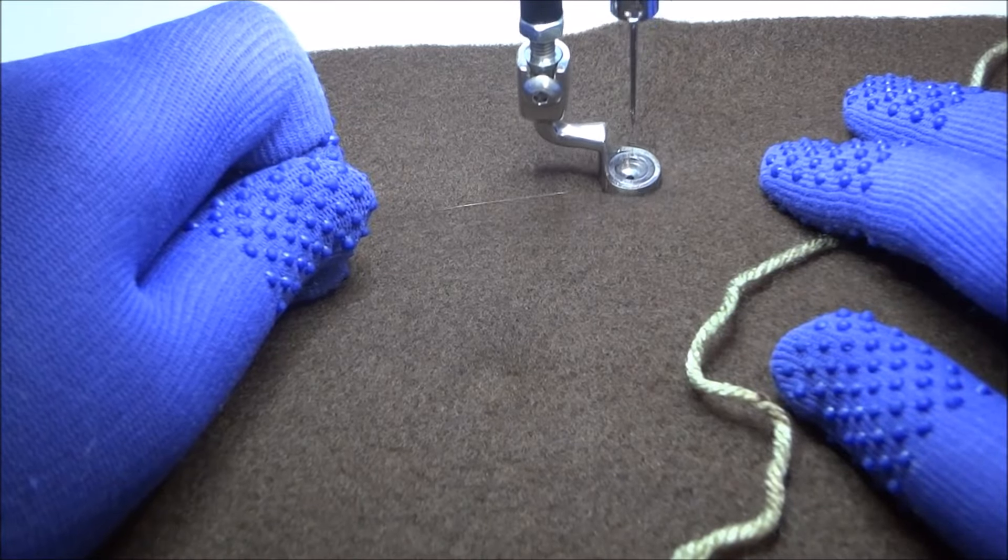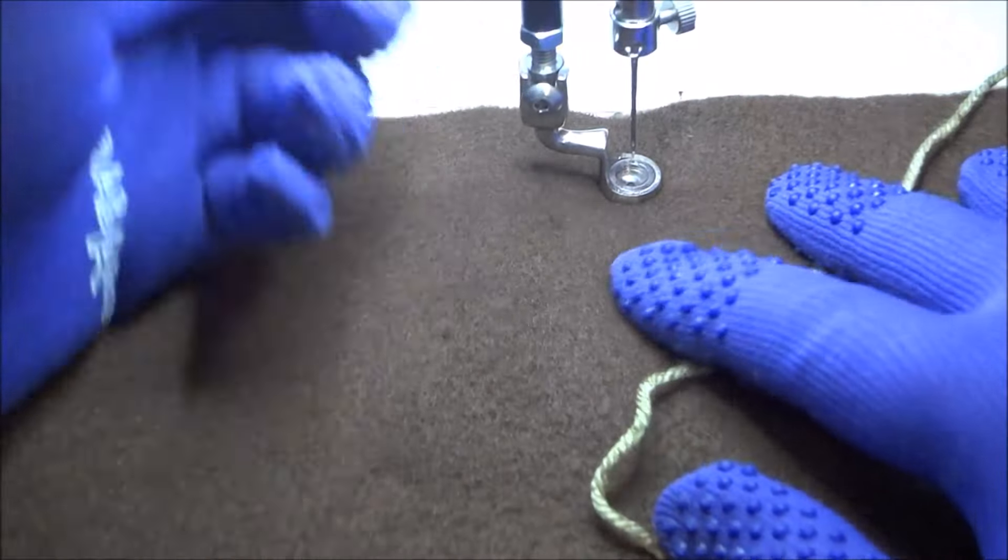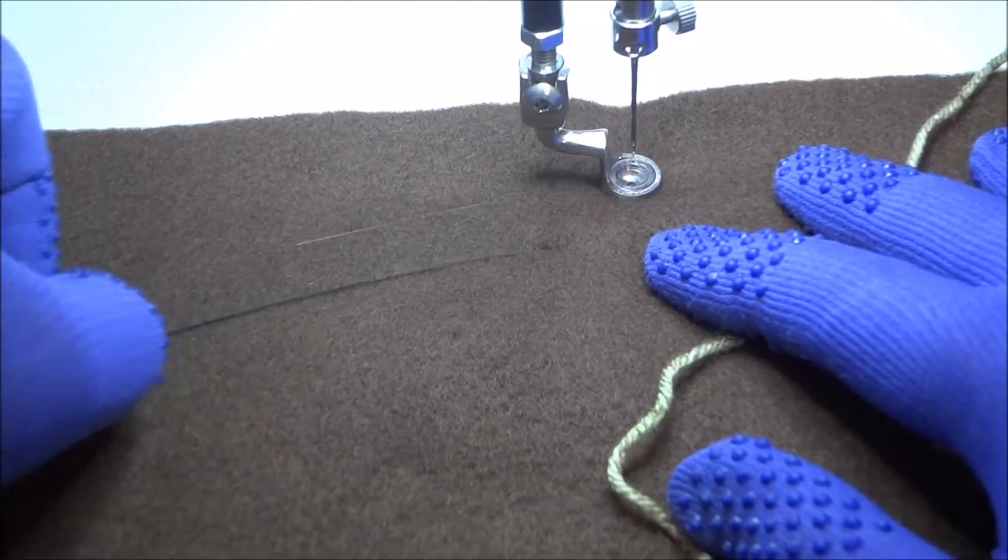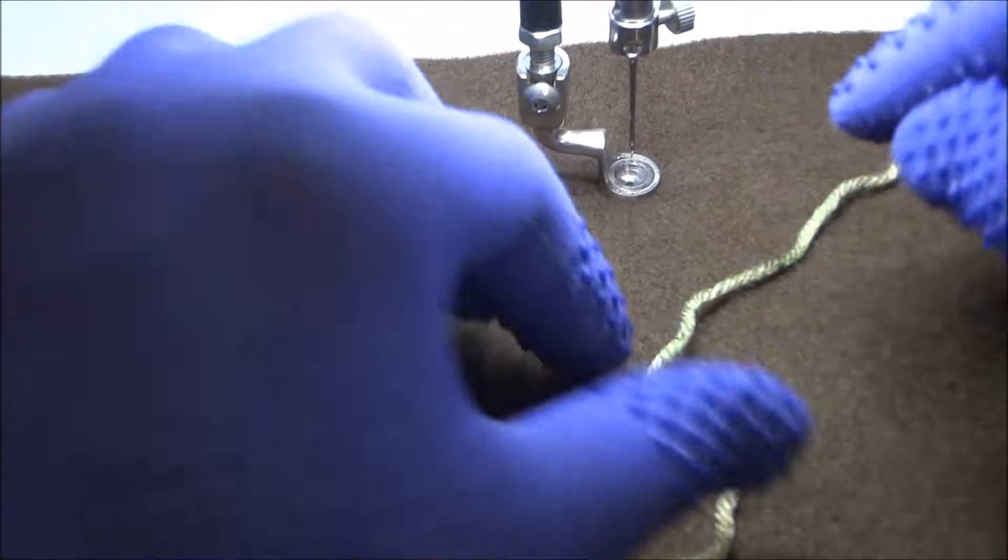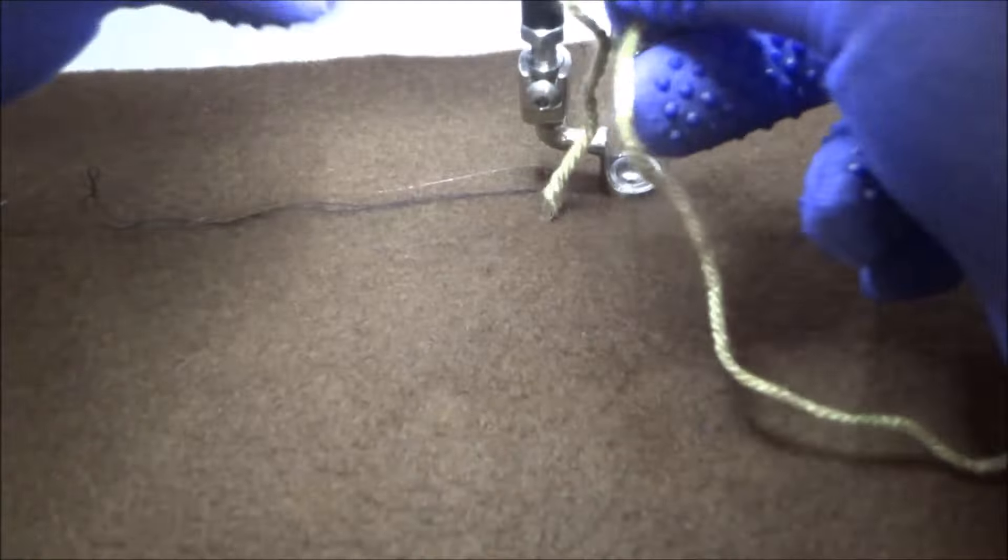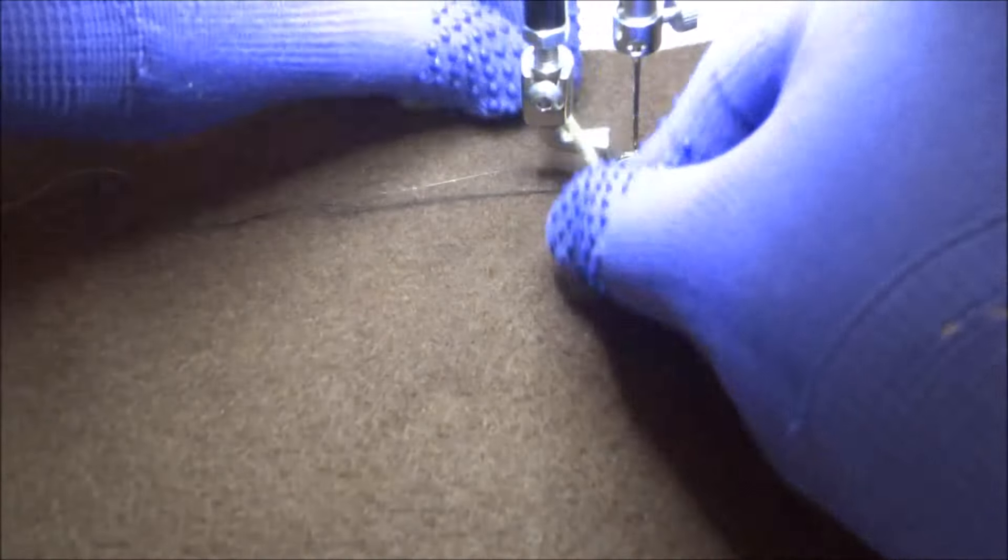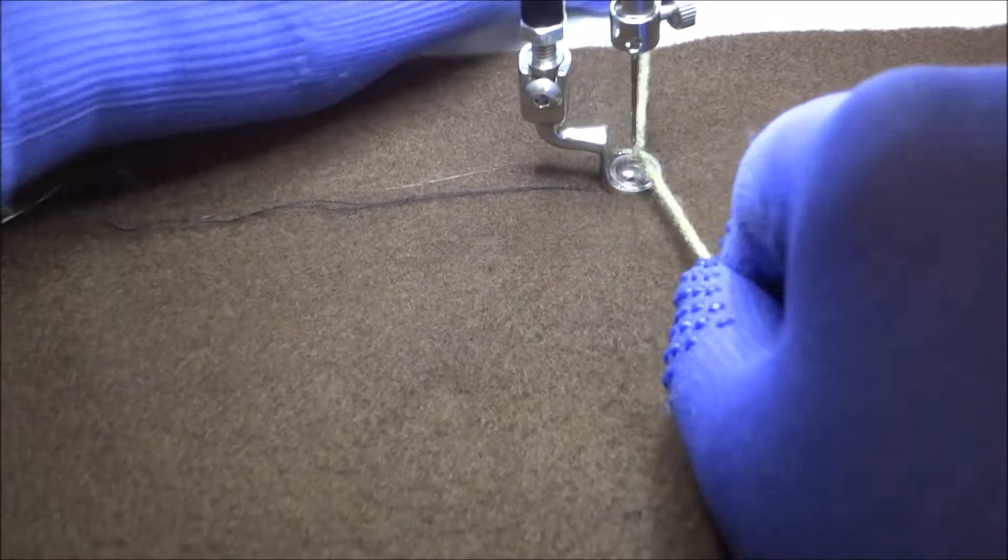First thing we're going to do is bring our bobbin thread up, just like we always do. Now it's hard for you to see my top thread because I have invisible thread in there. Now I'm going to take my yarn and put it between the foot shank and the needle. Bring it down.